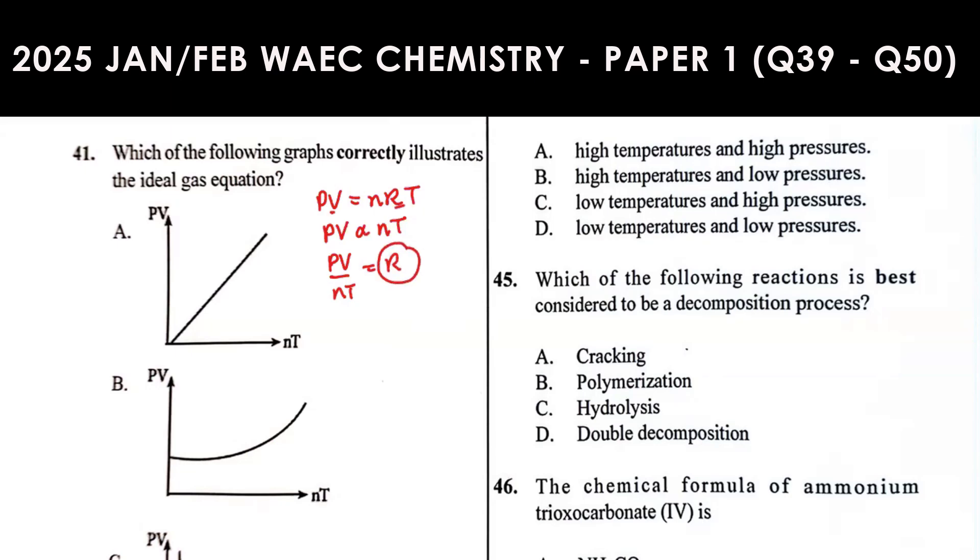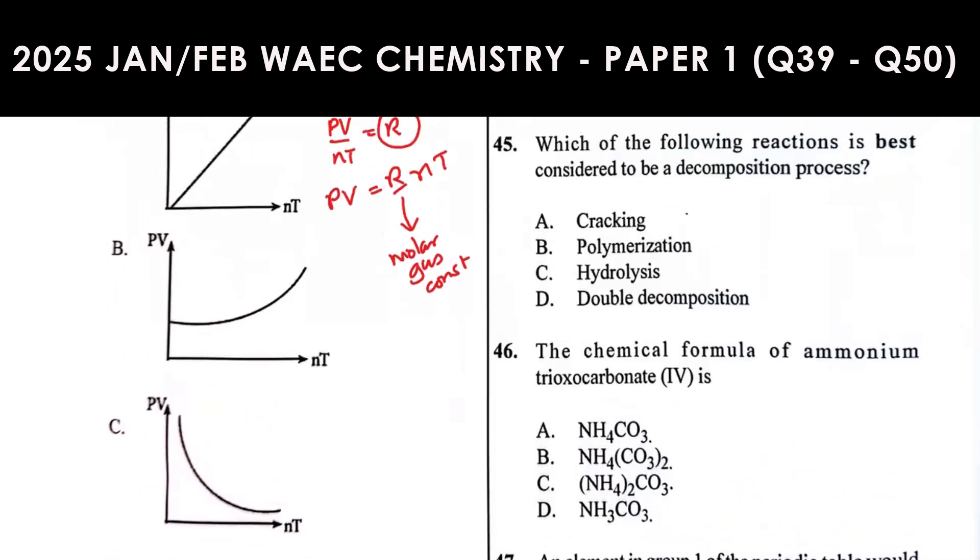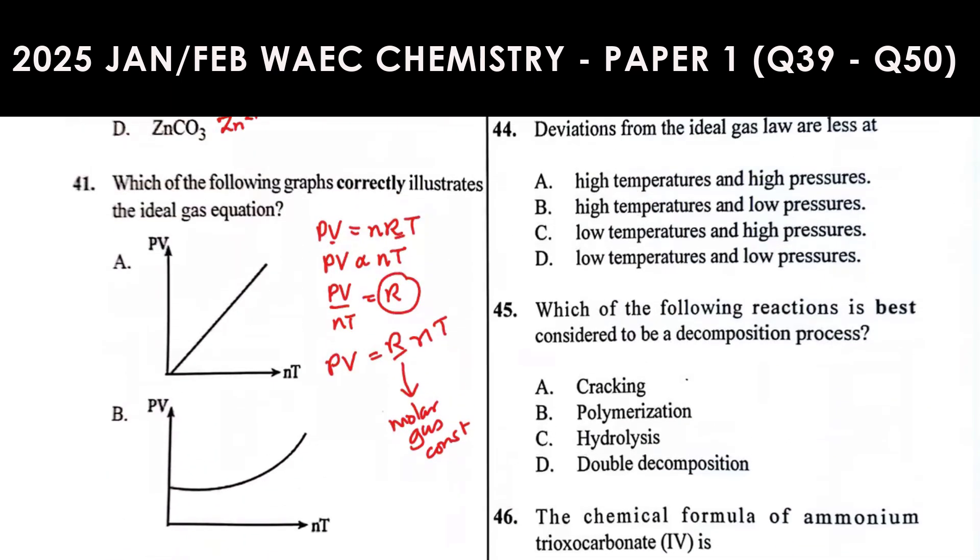This means that if we are plotting a graph of PV against NT, then the graph will pass through the origin, and the slope of the graph will be equal to R, the molar gas constant. Which of these options gives us a linear graph that passes through the origin? The answer is A.